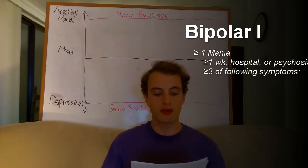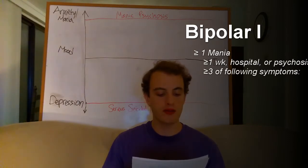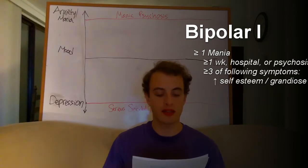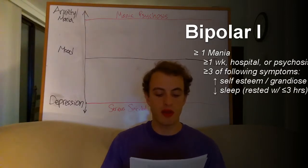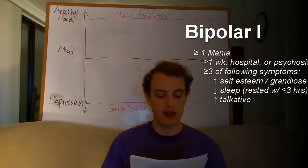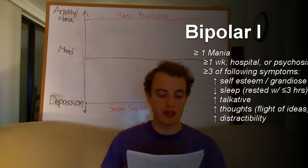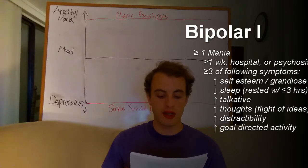During the period of mood disturbance and increased energy or activity, three or more of the following symptoms — four if the mood is only irritable — are present to a significant degree and represent a noticeable change from usual behavior: 1. Inflated self-esteem or grandiosity. 2. Decreased need for sleep — feels rested after only three hours of sleep. 3. More talkative than usual or pressure to keep talking. 4. Flight of ideas or subjective experience that thoughts are racing. 5. Distractibility, as reported or observed. 6. Increase in goal-directed activity or psychomotor agitation.